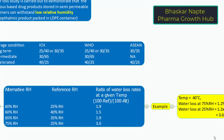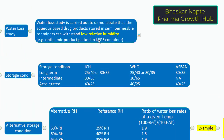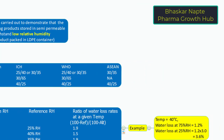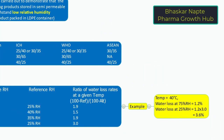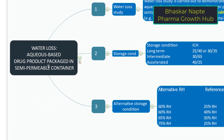This illustrates an important concept: water loss at lower relative humidity is always higher. At 75% RH the water loss was 1.2%, but at 25% RH it is 3.6%. This is why the guidance requires the water loss study to be conducted at low relative humidity — that is the worst-case condition. Water loss study is required for aqueous-based products packaged in semi-permeable containers. If the product is in an impermeable container, no water loss study is needed, since impermeable containers do not allow water loss. Thank you.